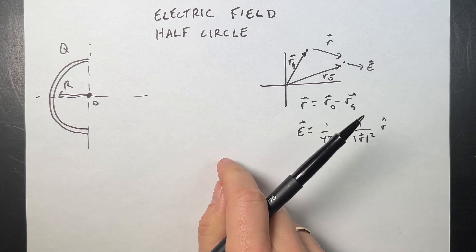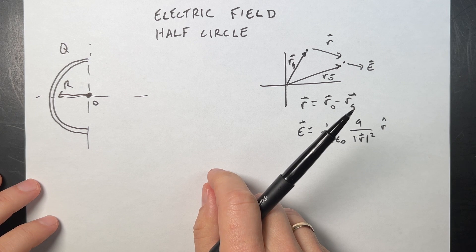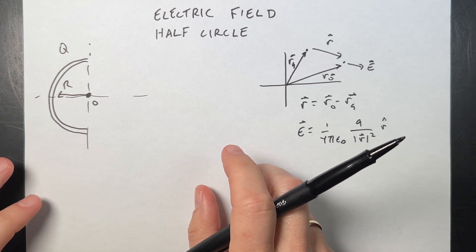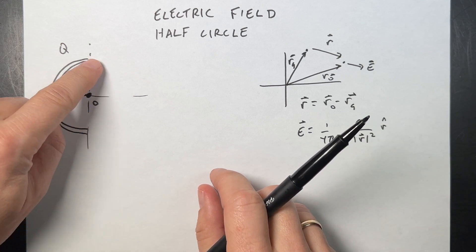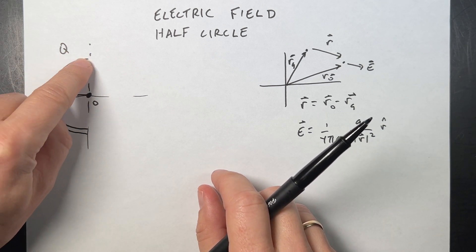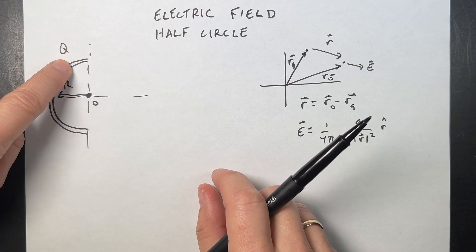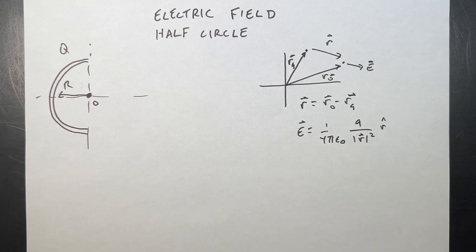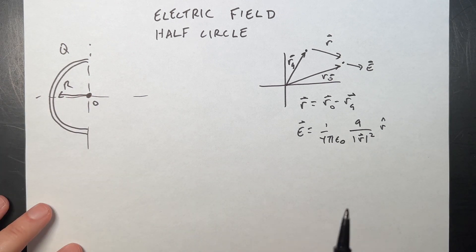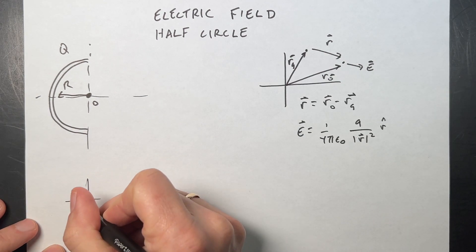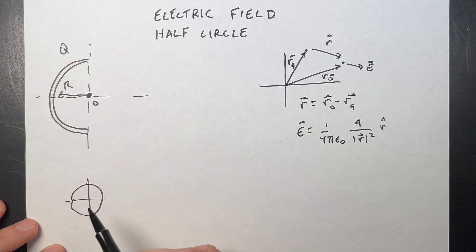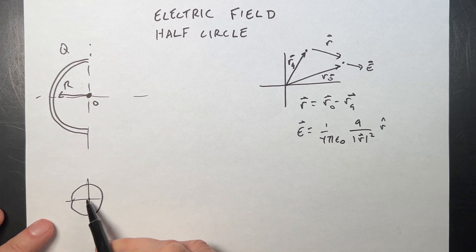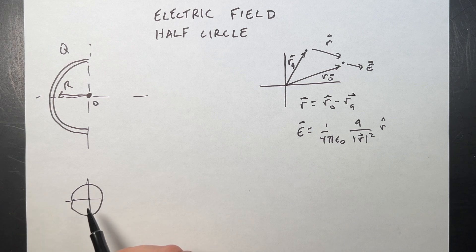Let's do this fun physics problem. This is a problem that shows up a lot to challenge students and their ideas about how to calculate the electric field. The problem is a half ring of charge — a semicircle of radius R with total charge Q — and we want to find the electric field at the center. This is usually done after students work with the full ring of charge, where the electric field is zero at the center, and calculate the field on the z-axis.